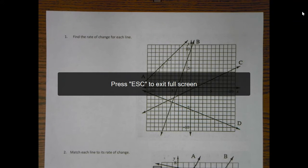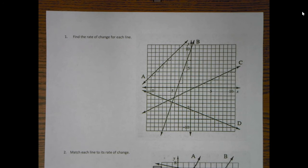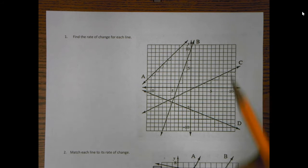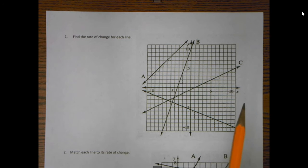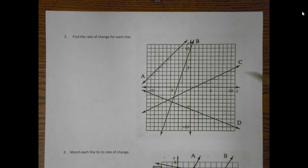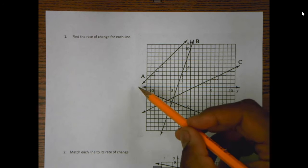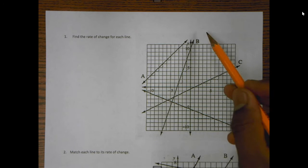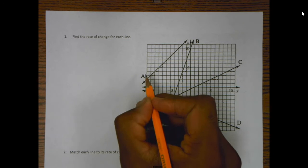Alright, we're looking at rate of change and slope. Let's find the rate of change for each line. I have all these different lines and I need to find the slope for each one. We'll go one at a time in alphabetical order, starting with line A.